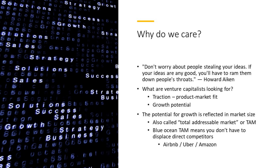Blue Ocean TAM means you don't have to displace direct competitors. With most growth businesses, they're going to be hurting somebody. Airbnb doesn't have a lot of direct competitors in their unique business model, but their indirect competitors — hotels — have really suffered as a result of their success. Uber has some direct competitors in various geographies, but taxi drivers in some countries have formed coalitions to push Uber out. Then you have Amazon, who does have some direct e-commerce competitors, but they're absolutely dominating.